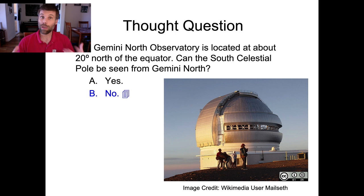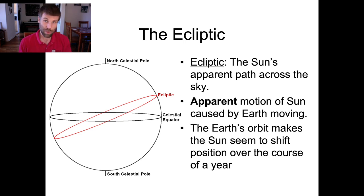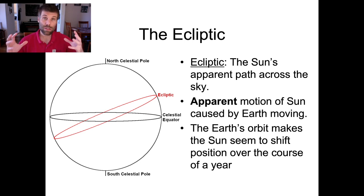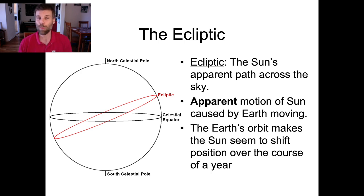Now that we understand how we can use the celestial sphere to visualize the stars and how they might look to a given observer, let's talk about the other very important feature of the celestial sphere — the ecliptic. The ecliptic has no terrestrial analog, because it is created by the interplay between the Sun and the motion of the Earth. The ecliptic is the apparent path that the Sun takes across the sky over the course of a year. This apparent motion is caused solely by Earth's orbital motion around the Sun — as Earth orbits, the Sun appears to be in different places, even though the Sun is not moving nearly as much as the Earth is.